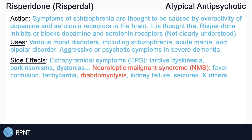Antipsychotics like Risperidone may cause a life-threatening reaction called neuroleptic malignant syndrome, or NMS. NMS presents as high fever, confusion, tachycardia, and muscle rigidity, and can lead to further complications like rhabdomyolysis, kidney failure, and seizures.